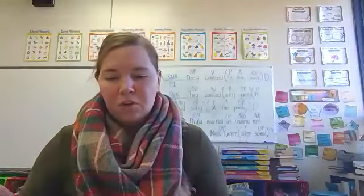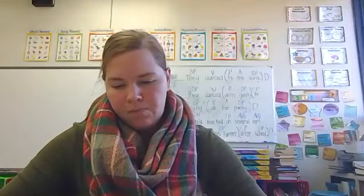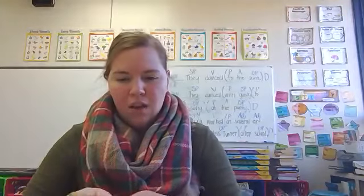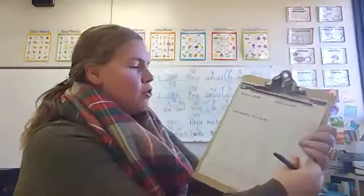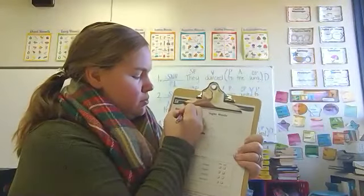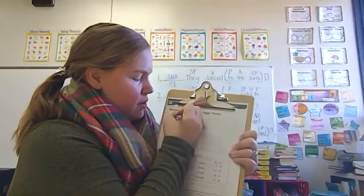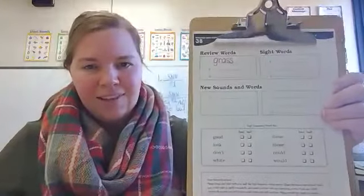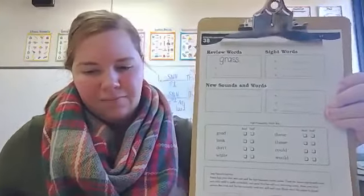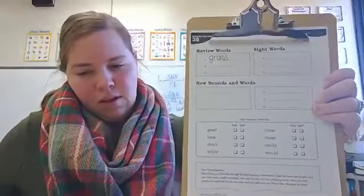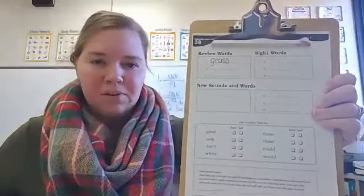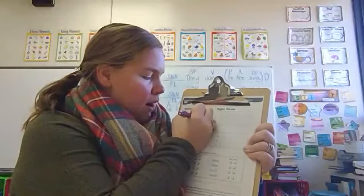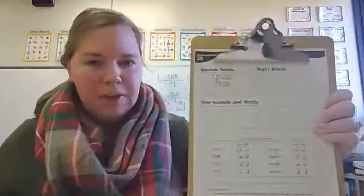Alright, so let's turn the worksheet over to number four. We are going to practice spelling some words. On number one, spell the word grass. Grass — G-R-A-S-S. Number two, trap. Trap — T-R-A-P.